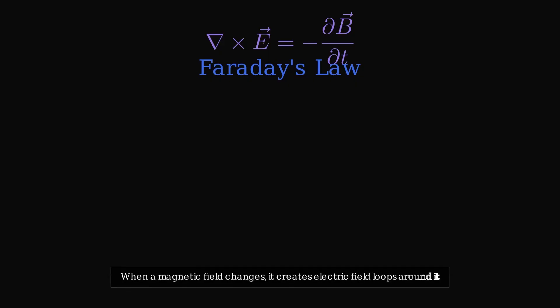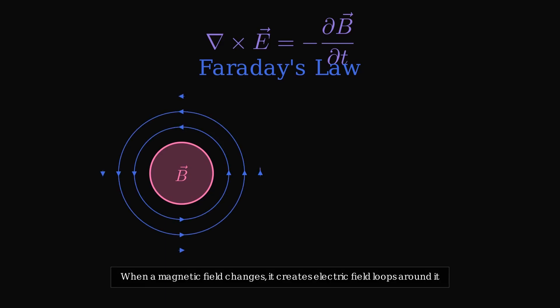Let's start with Faraday's law. When a magnetic field changes, it creates electric field loops around it. Imagine a changing magnetic field at the center. This creates circular electric fields around it, like ripples in a pond, but made of electricity.